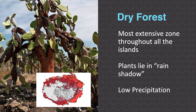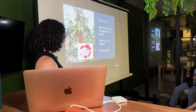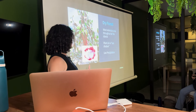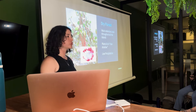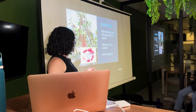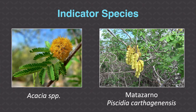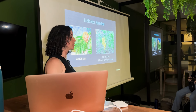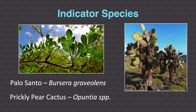The next ecosystem zone is the dry forest — the most extensive zone throughout the Galapagos across all islands. The primary area lies in the rain shadow. Some indicator species include acacia and Piscidia carcinogensii, also called ironwood because the wood is used in construction of houses and boats in the Galapagos. Another indicator is Palo Santo, Bursera graveolens — the incense tree. Palo Santo translates to 'holy wood' and is used against bad energy or as incense; when you get some sap, it has a very nice aroma.